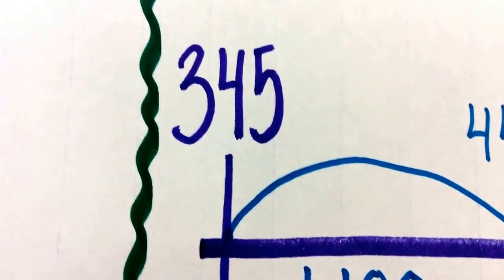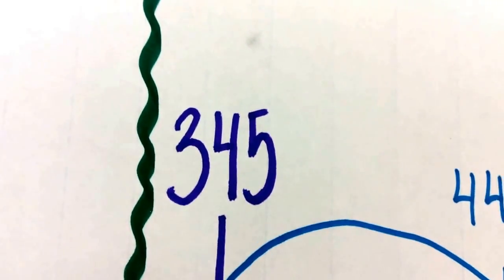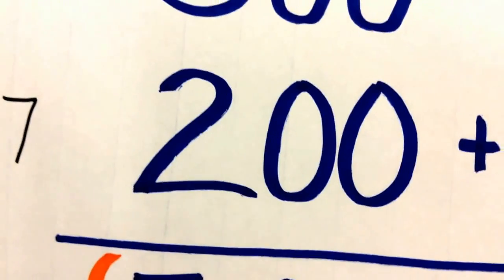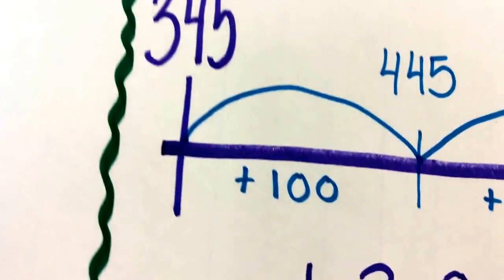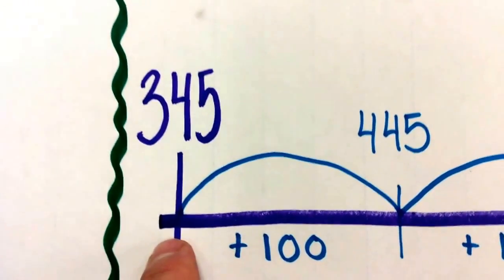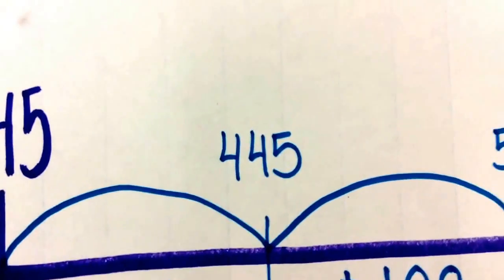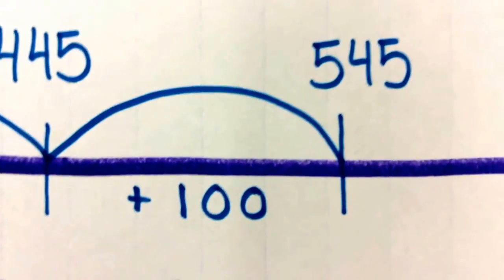Here's my 345. I need to add the 287 to it, and I'm going to use some of my skills from expanded form. I'm going to start by just adding 200 of the 287. Using my skip counting skills, I can break 200 into a group of hundreds. Adding 100 brings me to 445, and adding another group of 100 brings me to 545.